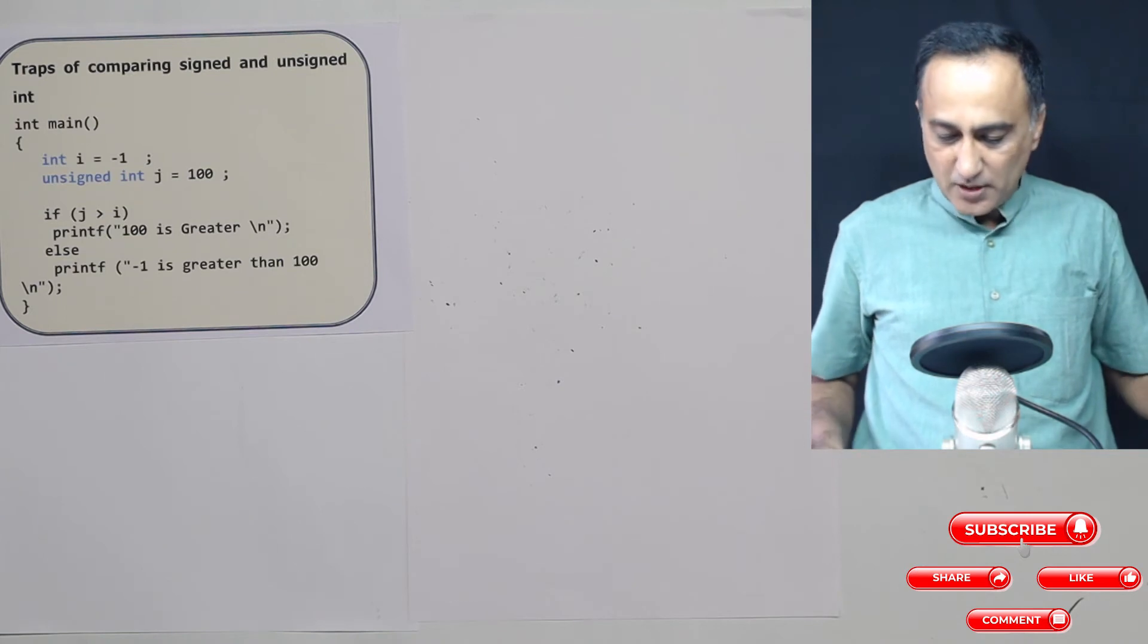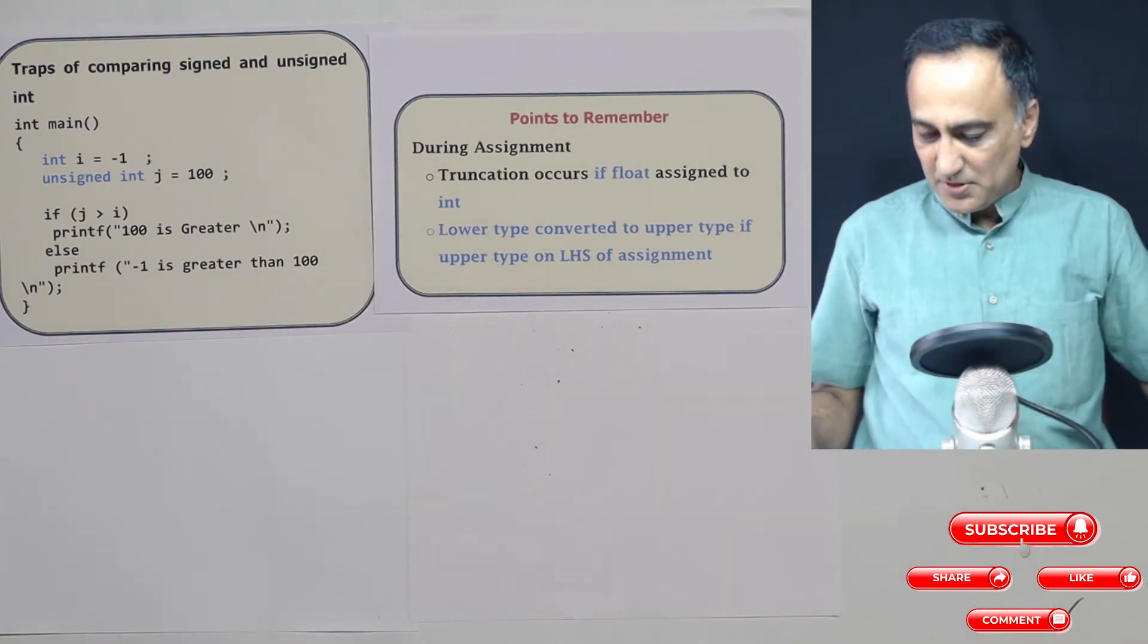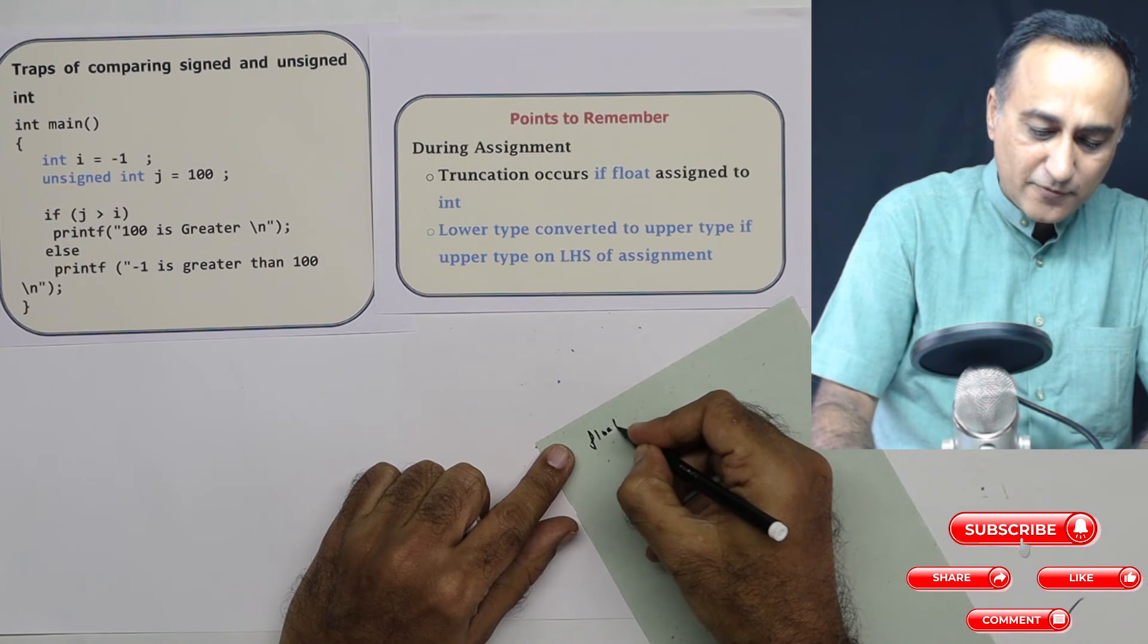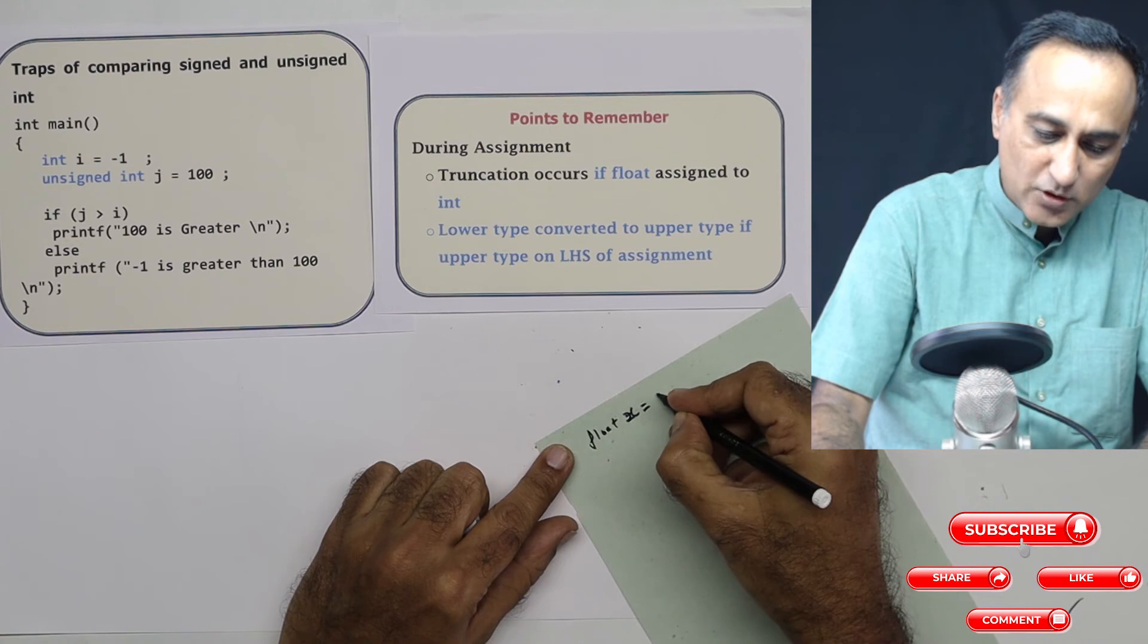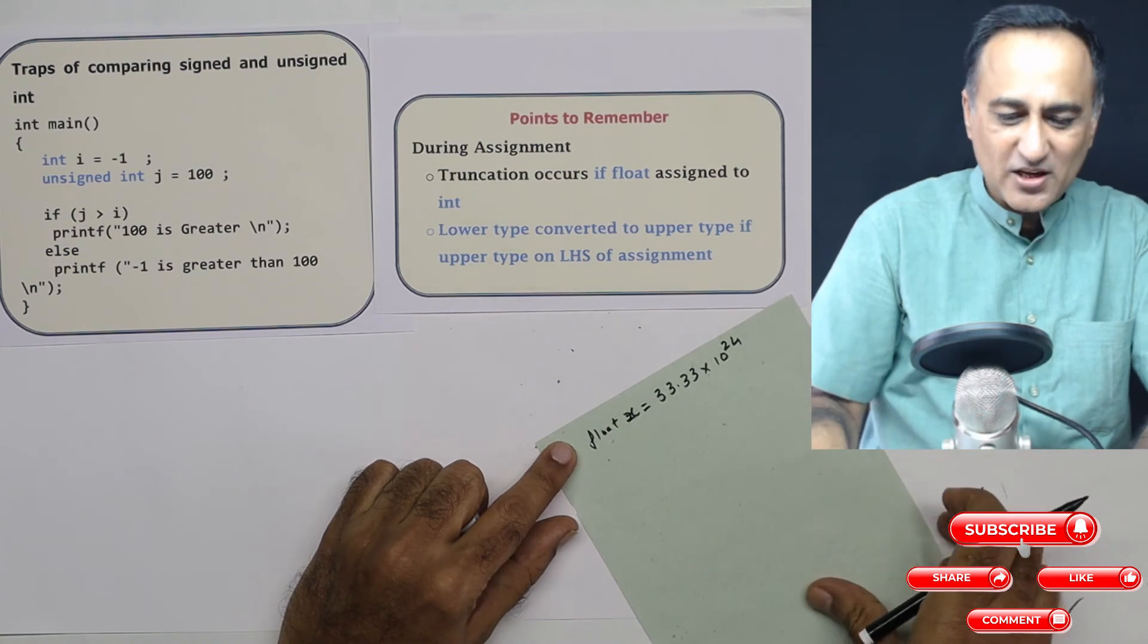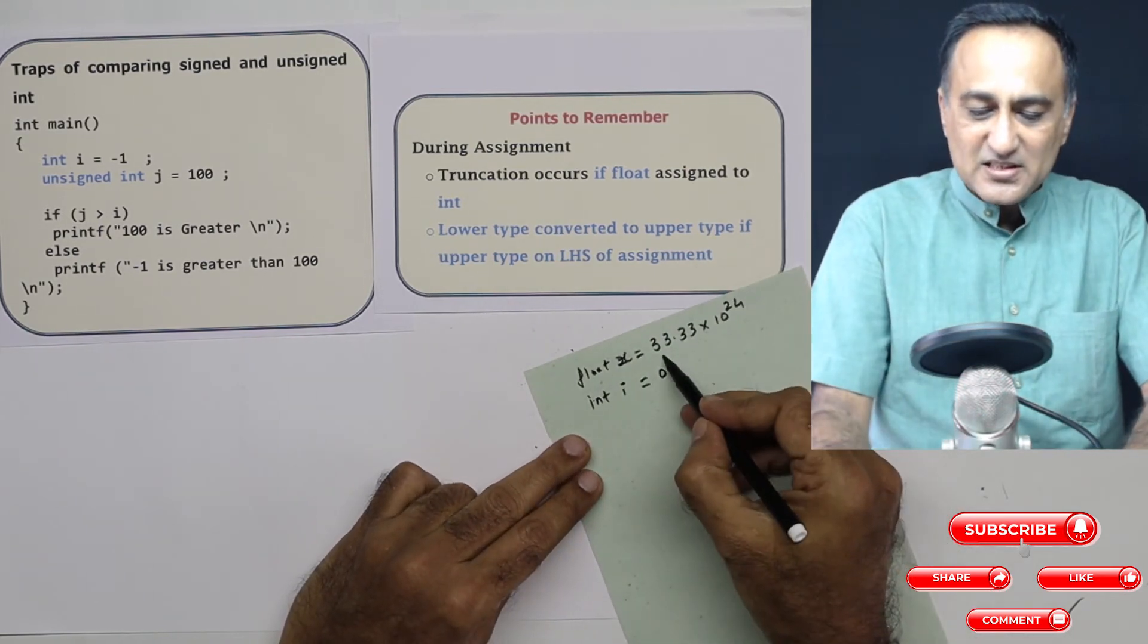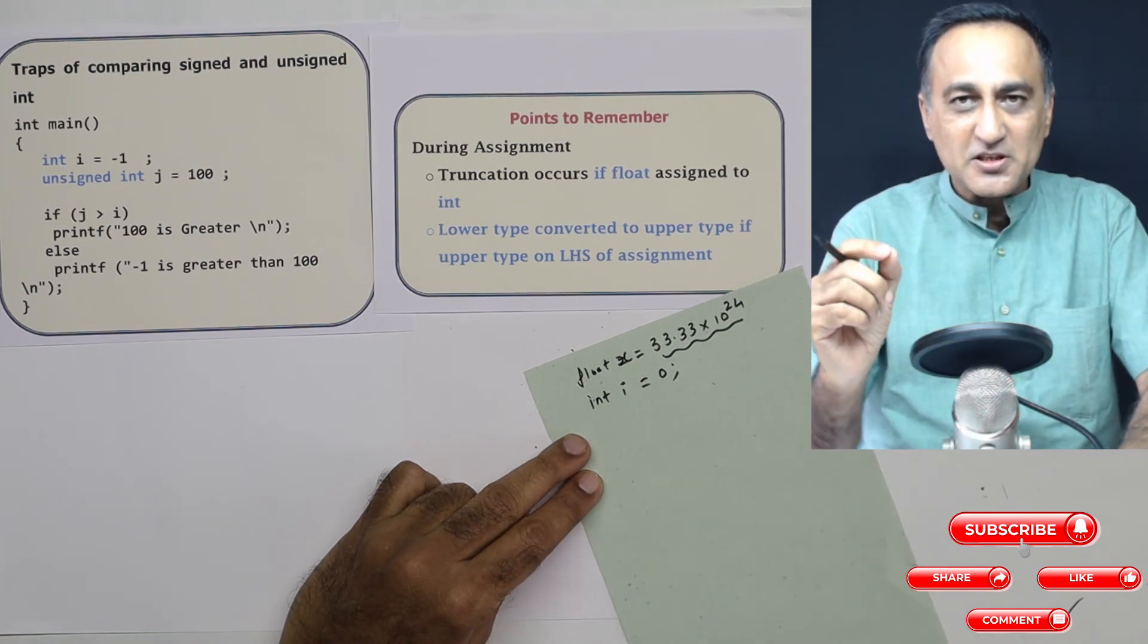So a few things you really need to remember. The first thing is, suppose you are doing an assignment. Now, I have a variable of the type float. Let's say I have got float x is equal to 333.333 times 10 raised to 24 just giving an example. And I have got int i is equal to 0. This is a really huge floating point number.